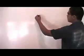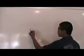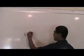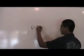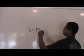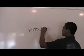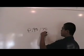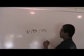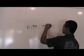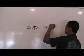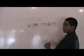P stands for passenger car tire. 195 is the width of the tire in millimeters. 70 is 70% of the width, which equals the height. R stands for radial and 14 is the size of the rim.